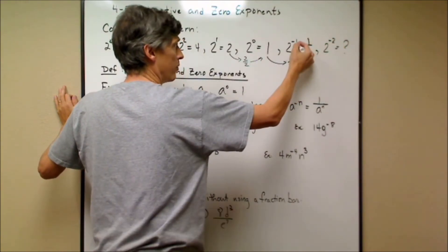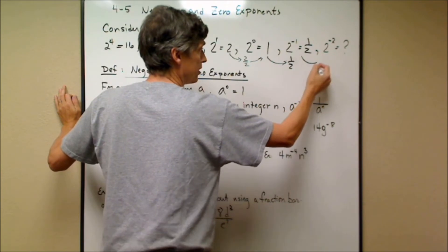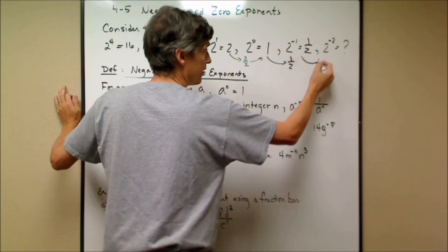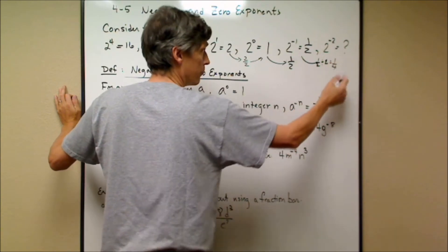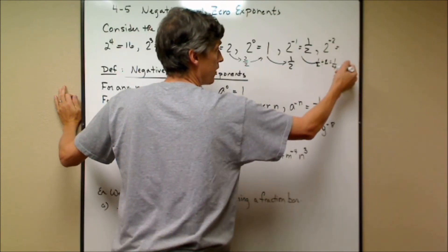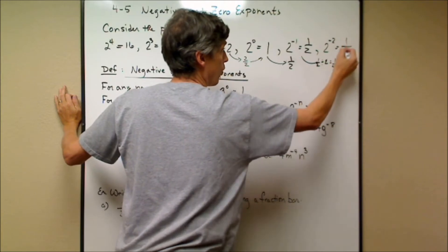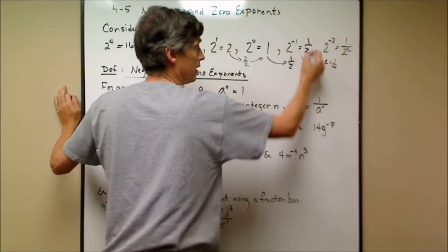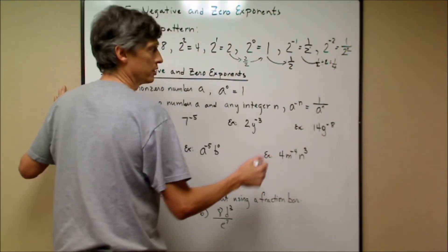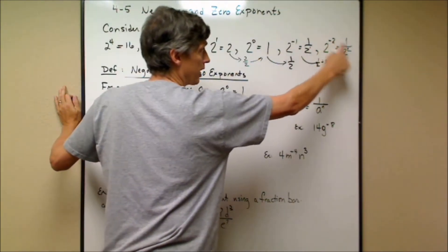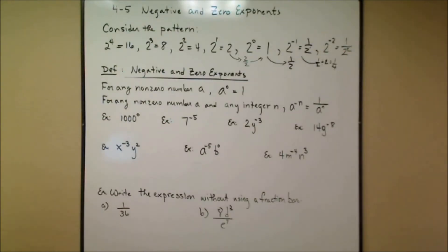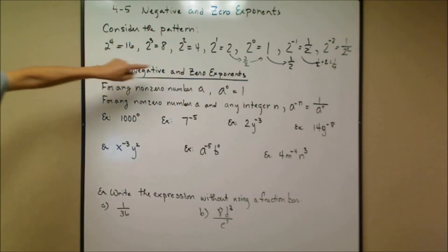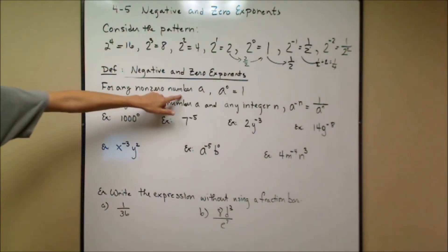If I subtract 1 from the exponent again, going from negative 1 to negative 2, I divide by 2 again: 1/2 ÷ 2 = 1/4, which is better written as 1 over 2 squared. Notice: negative 1 pairs with positive 1, and negative 2 pairs with positive 2 — there's a clear pattern here.